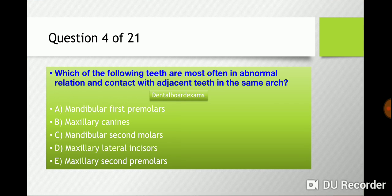Question four: which of the following teeth are most often in abnormal relation and contact with adjacent teeth in the same arch? If third molars are not among the answer choices, look for any answer which includes lateral incisors, because they always have different morphology, which causes a different relation with the rest of the teeth. The answer is maxillary lateral incisors.